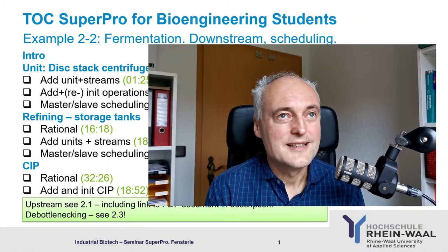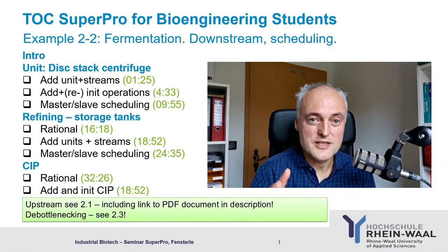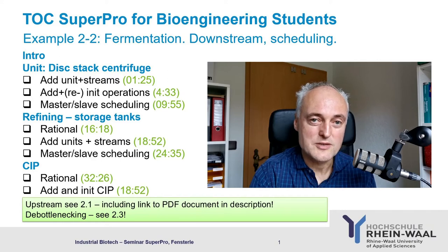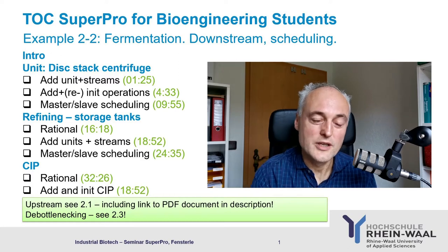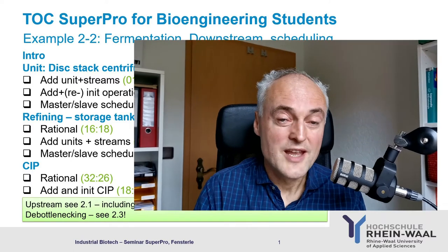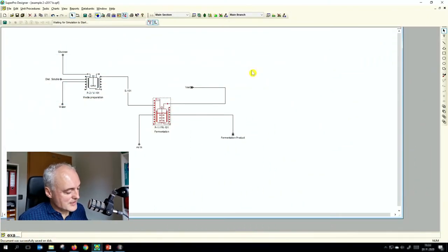We have done the basic setup with a bioreactor, a fermenter, and upstream a media preparation. We learned that with more than one unit we need to think about scheduling. Now we add downstream units: a centrifuge and some blending tanks, and you will see that the major task is scheduling.